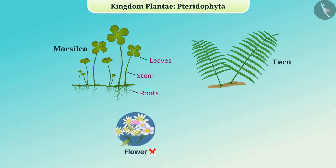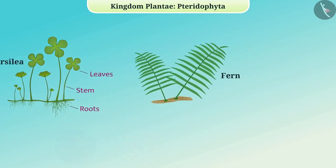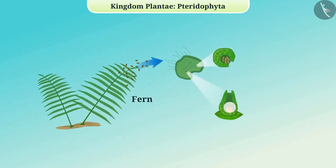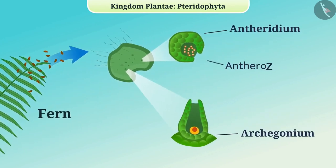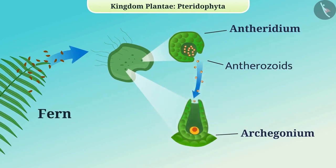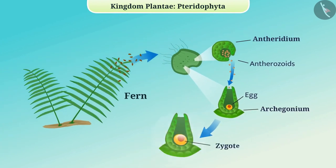Pteridophytes neither have flowers nor do they bear seeds. The gametophytes have male and female reproductive parts which are called antheridium and archegonium respectively. Antherozoids are released from the antheridium and reach the mouth of the archegonium through water. The egg present in the archegonium fuses with the male gamete to produce a zygote which develops into a new individual.